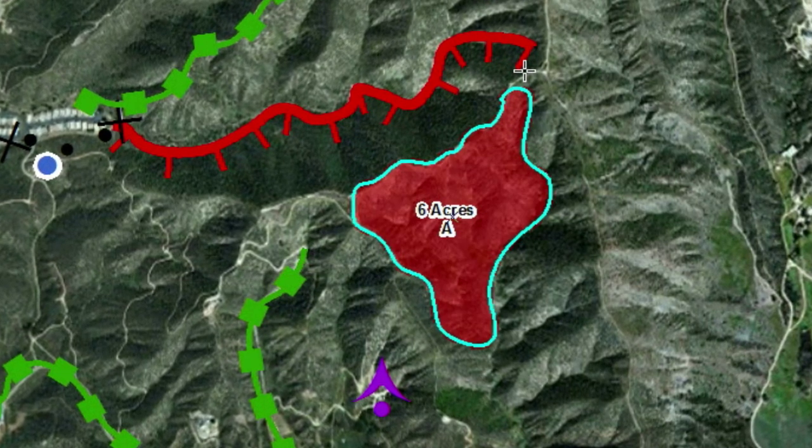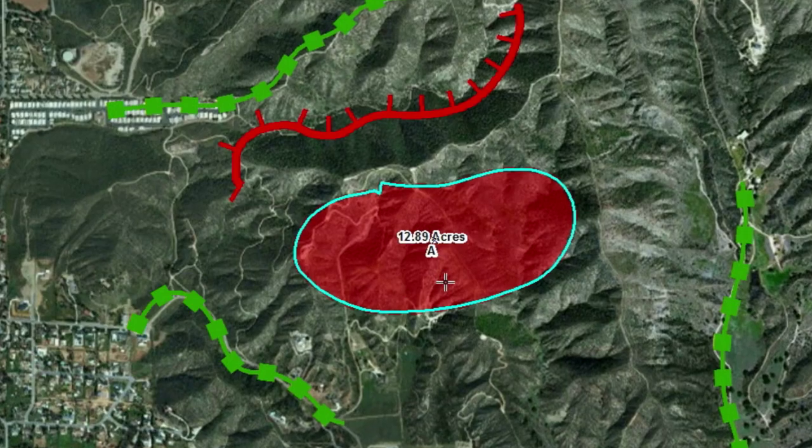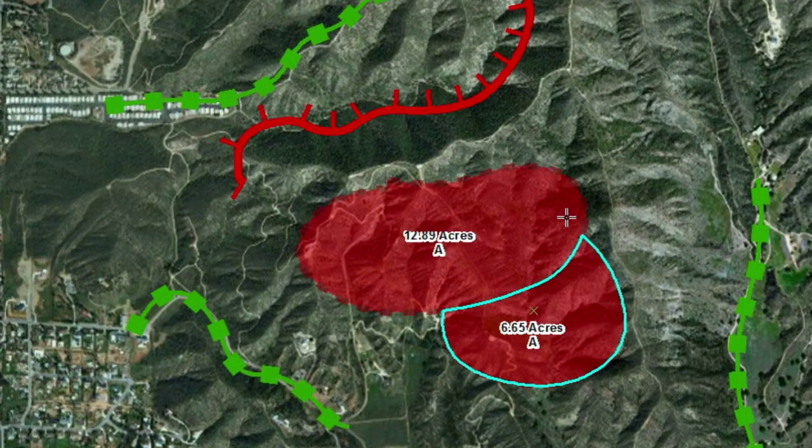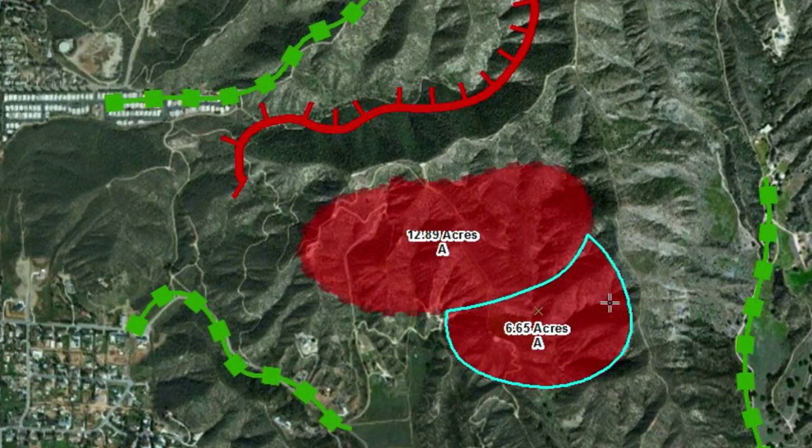Having this information created and accessed digitally means that firefighters don't have to wait hours — even half a day or more — to get that information. When we create the information live, we can push it out live to them. They have the information immediately and can make better decisions out in the field in order to save lives and property.